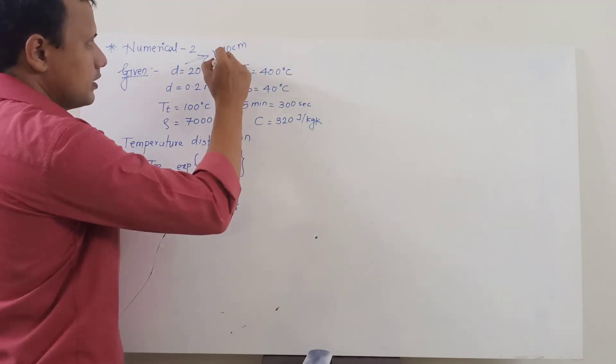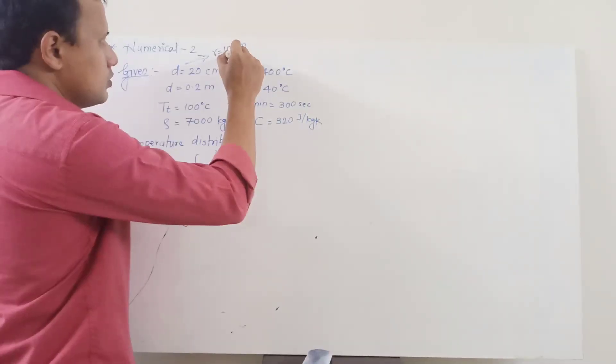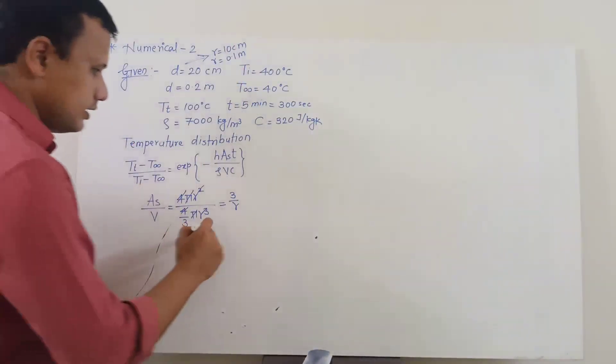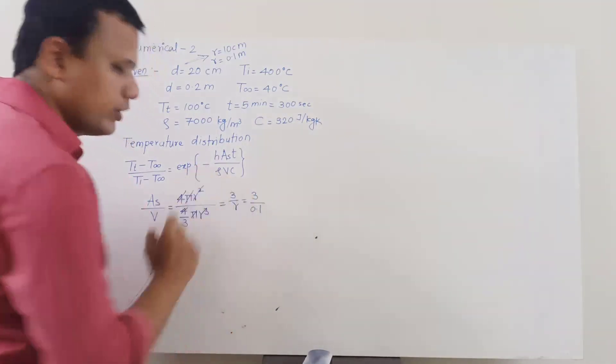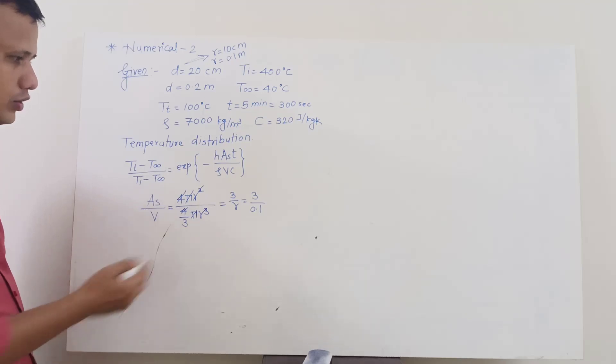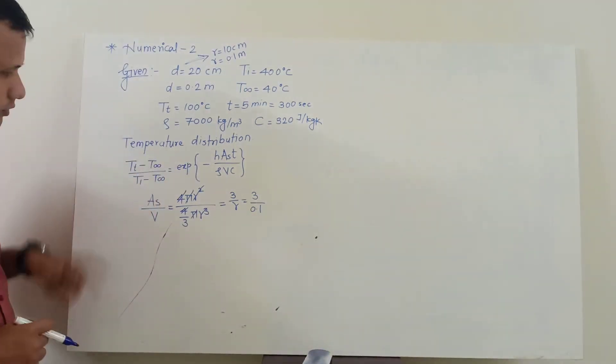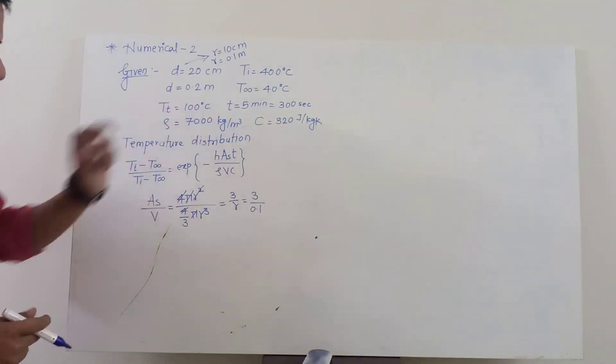So from here we can deduce that R is nothing but 10 centimeter because diameter is 20 centimeter, so R is equal to 0.1 meter. So ultimately this will become 3 divided by 0.1. You can calculate that quantity and then we can substitute it over here.